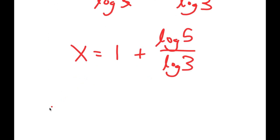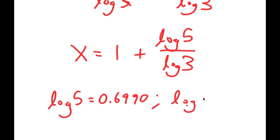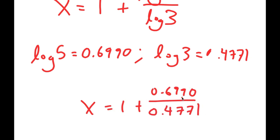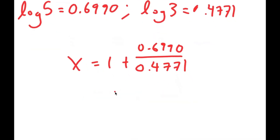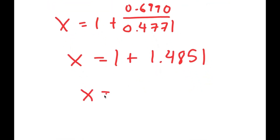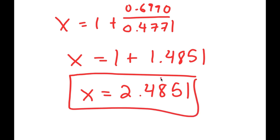Now log 5 is equal to 0.6990 and log 3 is equal to 0.4771. So this is going to equal 1 plus 0.6990 over 0.4771. Now 0.6990 over 0.4771 is equal to 1.4851, and 1 plus 1.4851 is equal to 2.4851, so this is my value of x. Make sure to subscribe and leave a like, and thank you, bye.